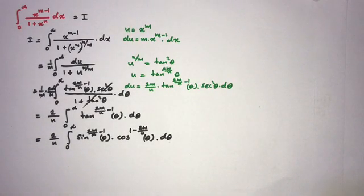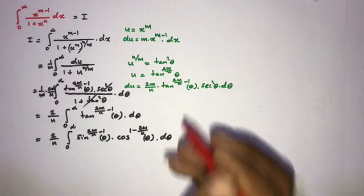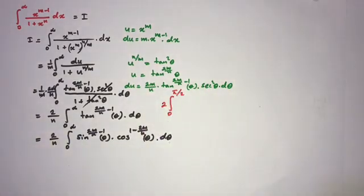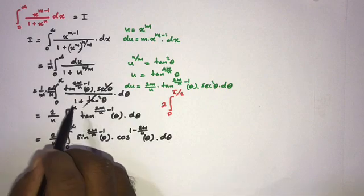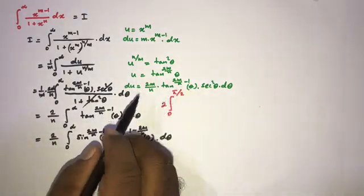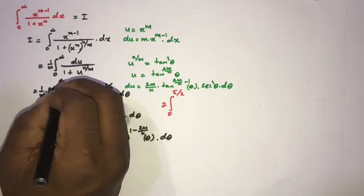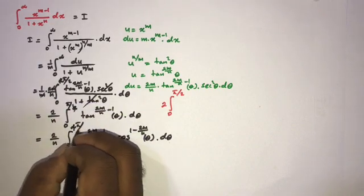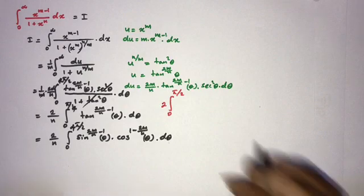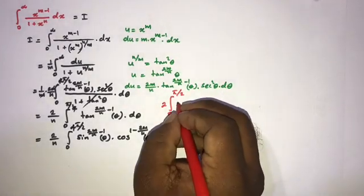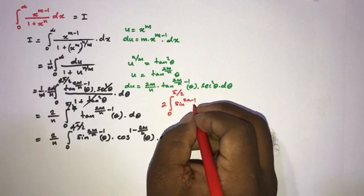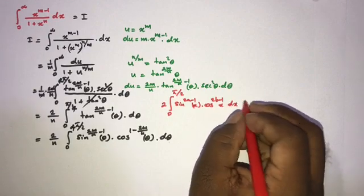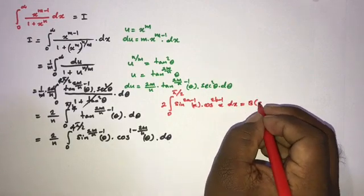We know the beta function. I made a mistake earlier — after the substitution the limits should be 0 to pi over 2. The beta function is: 2 times the integral from 0 to pi over 2 of sin to the 2a minus 1 of x times cosine to the 2b minus 1 of x dx equals beta of a, b. Comparing our integral with this formula, we can write the result as 2 over n times beta of m over n, 1 minus m over n.